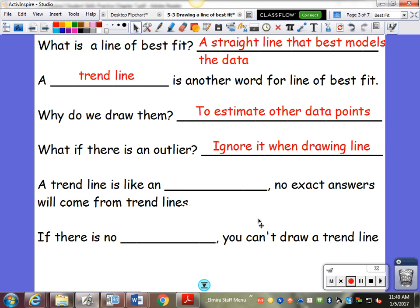What if there's an outlier? Well, like I just said, when you're drawing the line, you can ignore it. You're trying to fit the majority of the data. A trend line is like an estimate. You're not going to get exact answers from the trend line. But you're getting a better estimate than with that green highlighted zone.